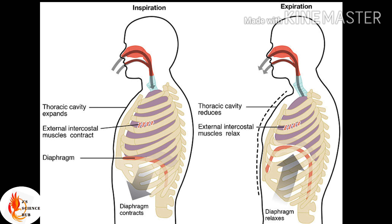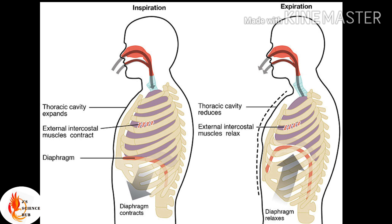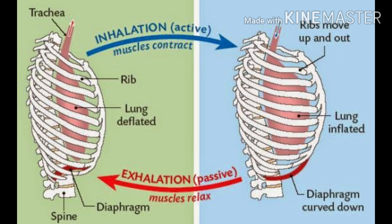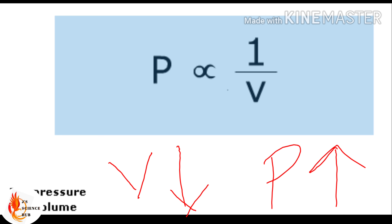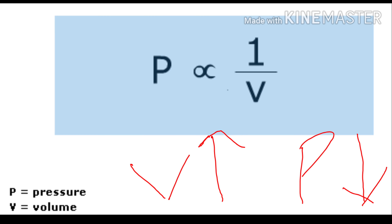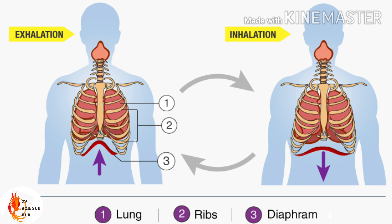Gas exchange between the external environment and lungs takes place by two processes: inspiration, the entry of external gas into the lungs, and expiration, where gases inside the lungs move out. Before studying inspiration and expiration, you should know the relationship between pressure and volume — pressure is inversely proportional to volume. If you decrease the volume, pressure increases, and vice versa. The process takes place due to a pressure gradient between the internal lungs and the external environment.